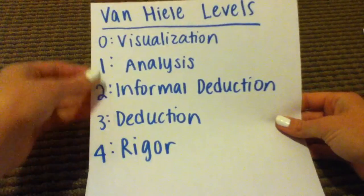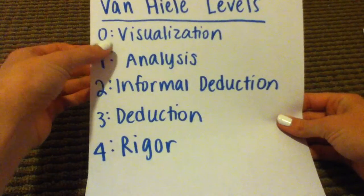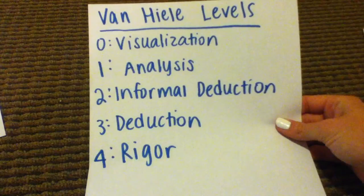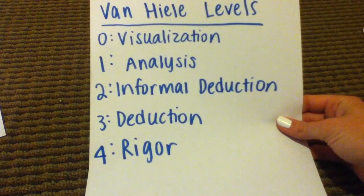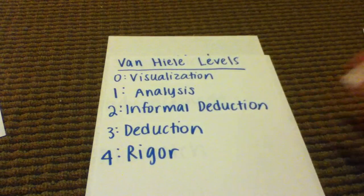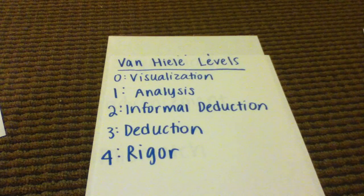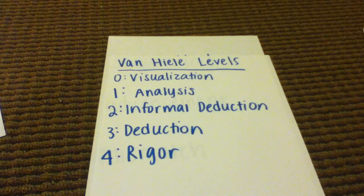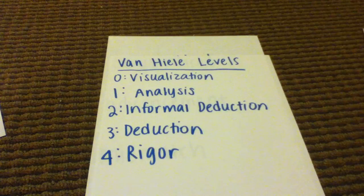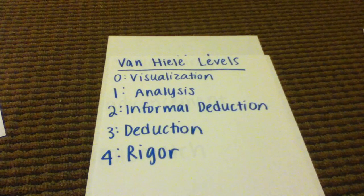The first level is level zero, and that's visualization. In this level, students are able to say what things look like. A common example of what a student might say at level zero would be 'a circle looks like a pizza,' because they're associating the visual with what they know.